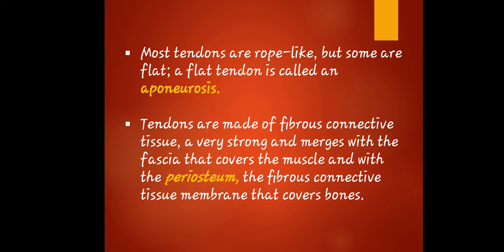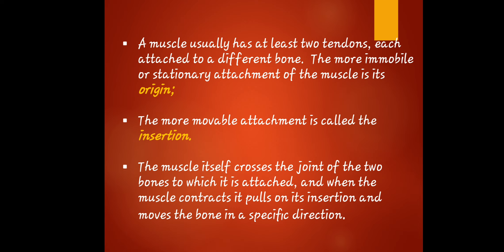A muscle usually has at least two tendons, each attached to a different bone. The more immobile or stationary attachment of the muscle is called the origin. The more movable attachment is called the insertion. The muscle itself crosses the joint of the two bones to which it is attached.